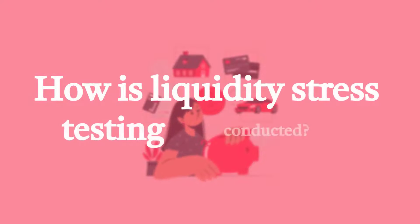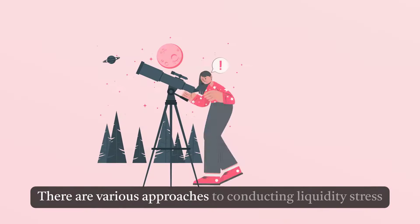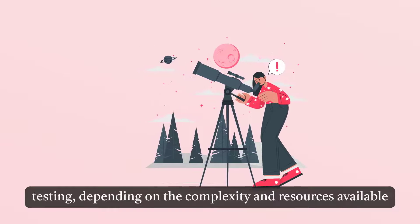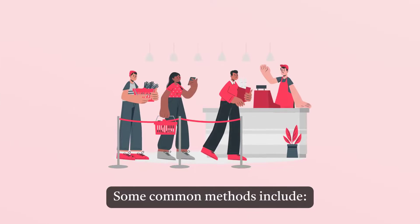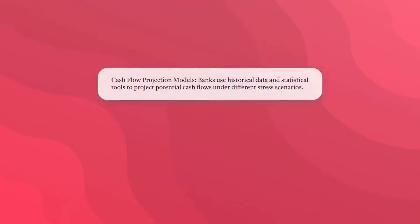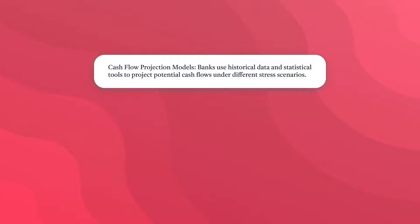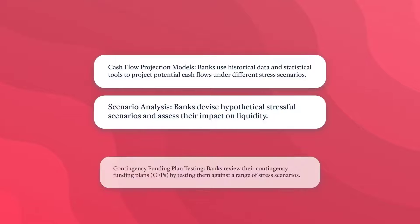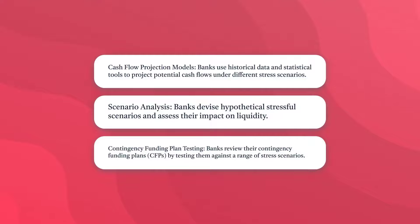How is liquidity stress testing conducted? There are various approaches to conducting liquidity stress testing, depending on the complexity and resources available to the bank. Some common methods include: cash flow projection models, where banks use historical data and statistical tools to project potential cash flows under different stress scenarios; scenario analysis, where banks devise hypothetical stressful scenarios and assess their impact on liquidity; and contingency funding plan testing, where banks review their contingency funding plans by testing them against a range of stress scenarios.